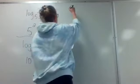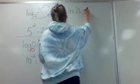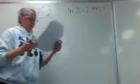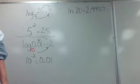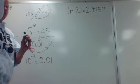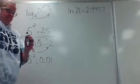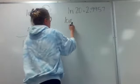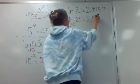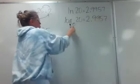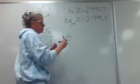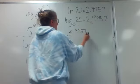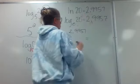Number 23: ln of 20 equals 2.9957. What's going to be the base of the exponent? This one's base is e, because ln is log base e. So: e to the 2.9957 power equals 20.